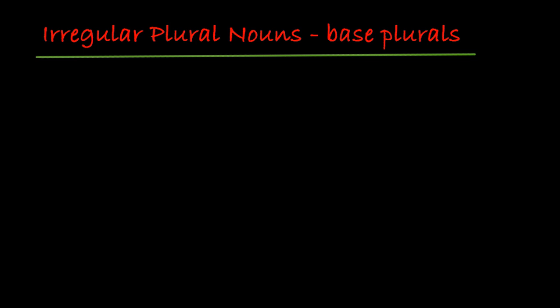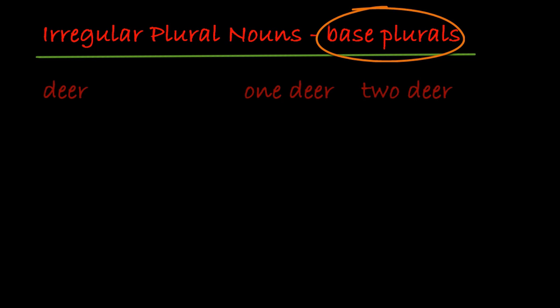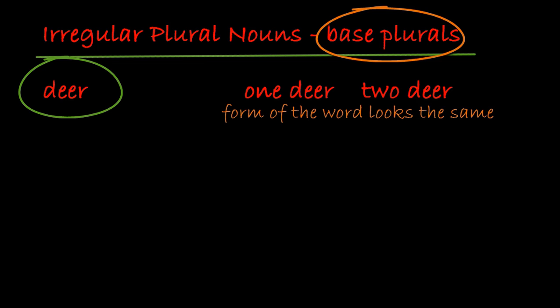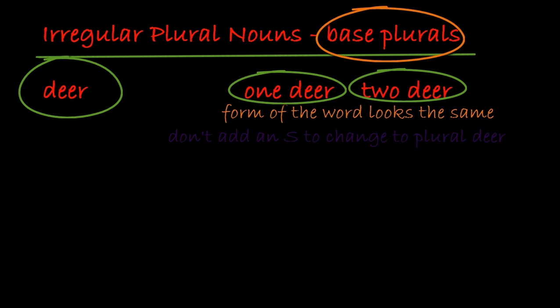Today I figured we'd talk about something called the base plural. There is a very strange word in that. It doesn't matter whether or not there's more than one of them — the form of the word always looks the same. Whether it's one deer or two deer, it's an irregular plural. You don't add an S. This is called the base plural, because the base word 'deer' doesn't change whether it's singular or plural.